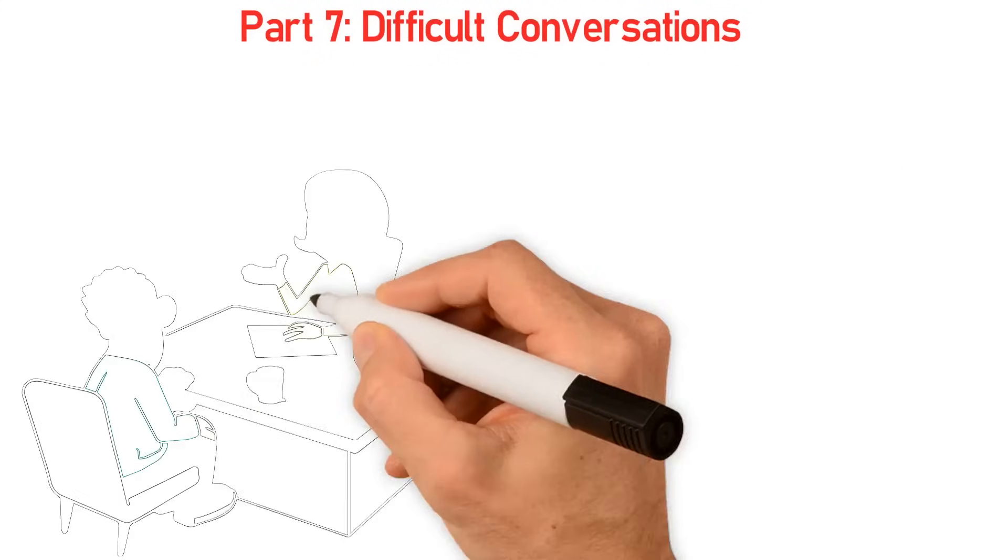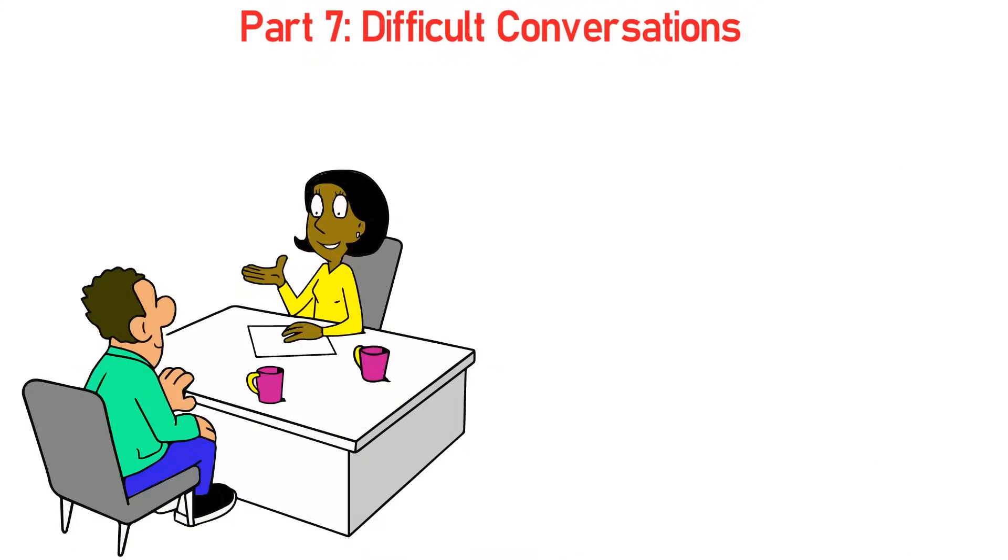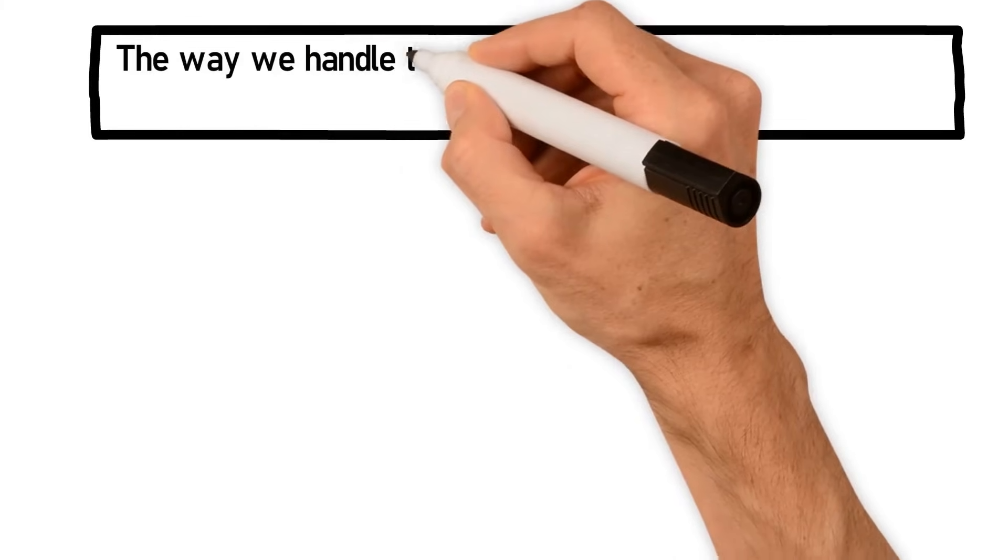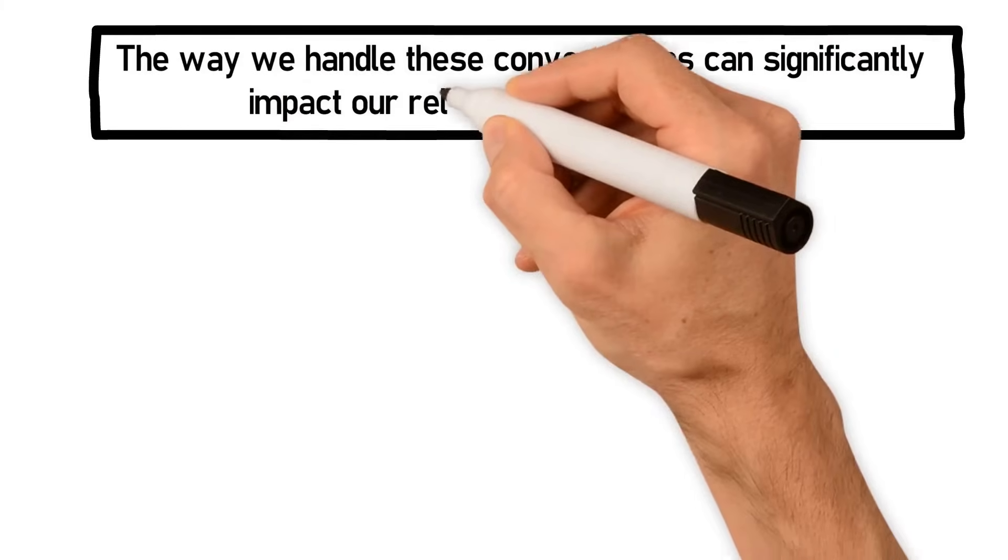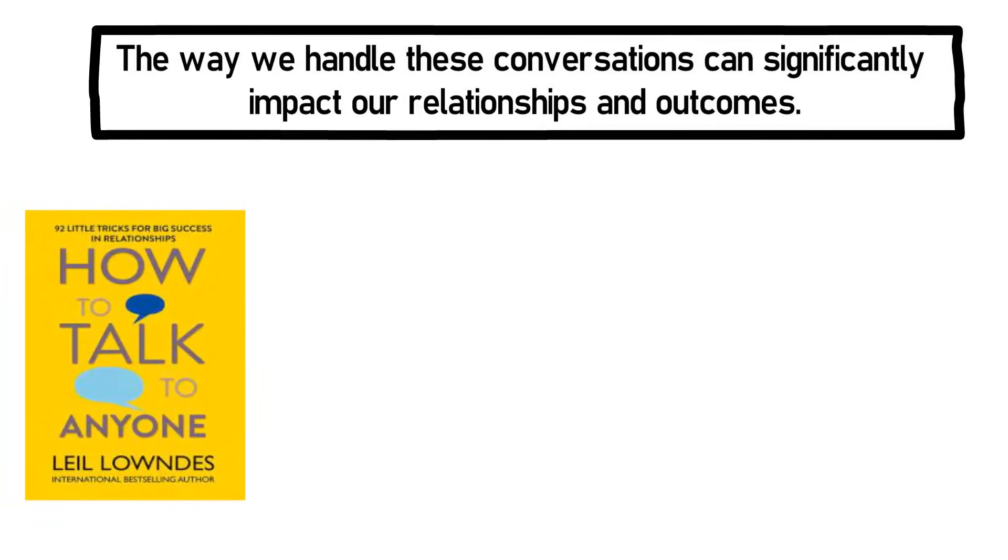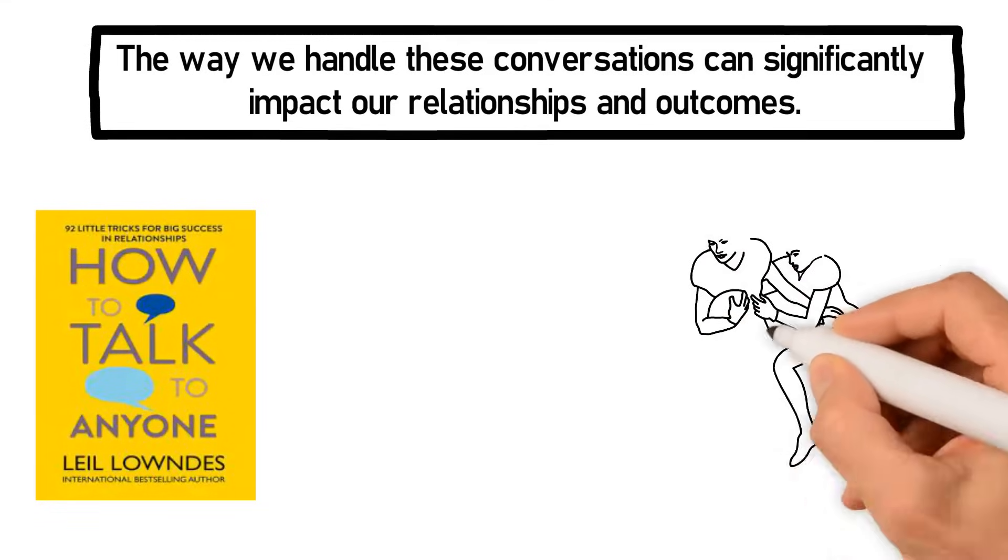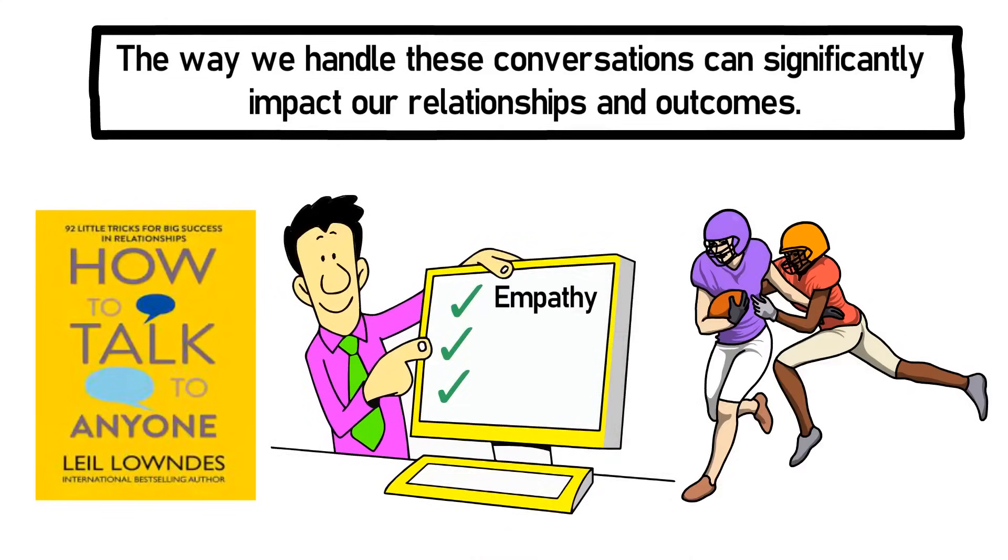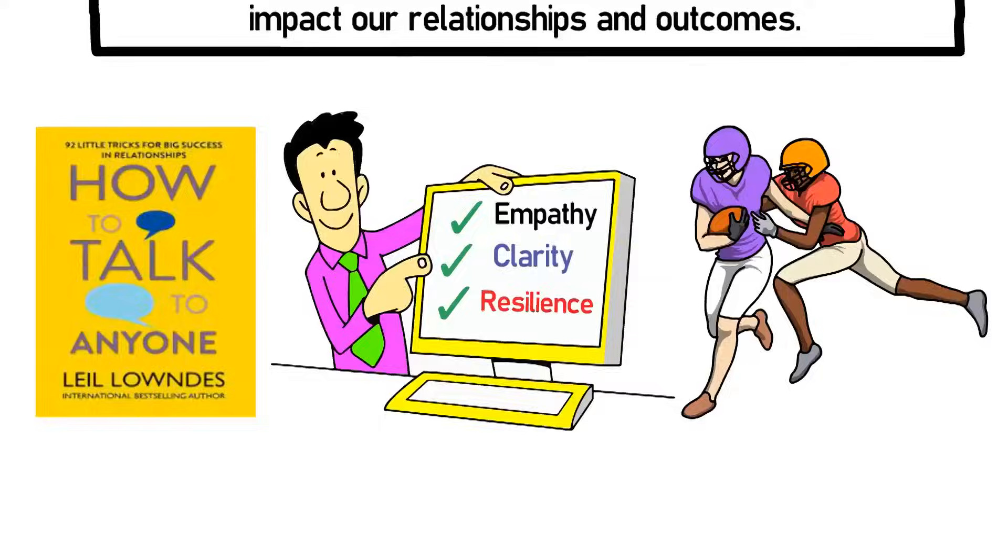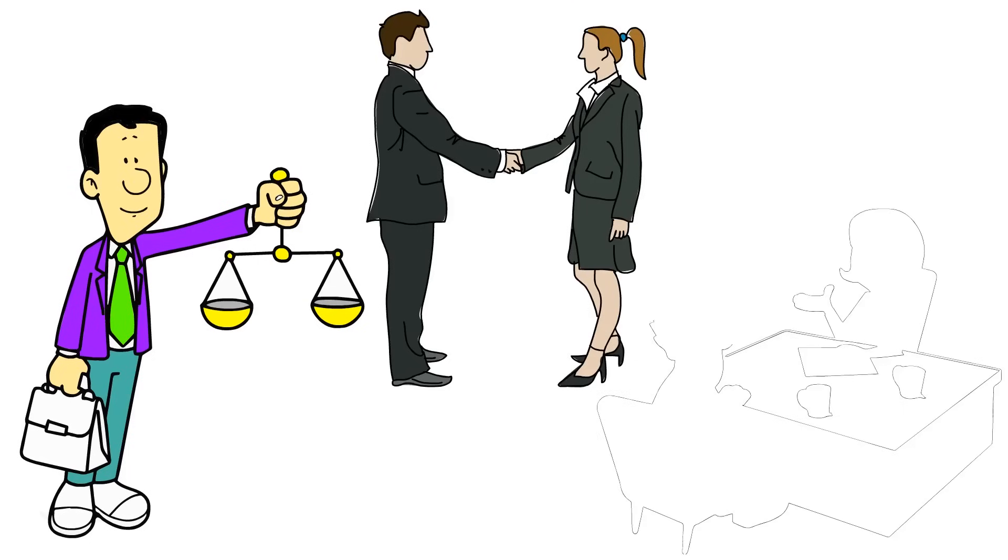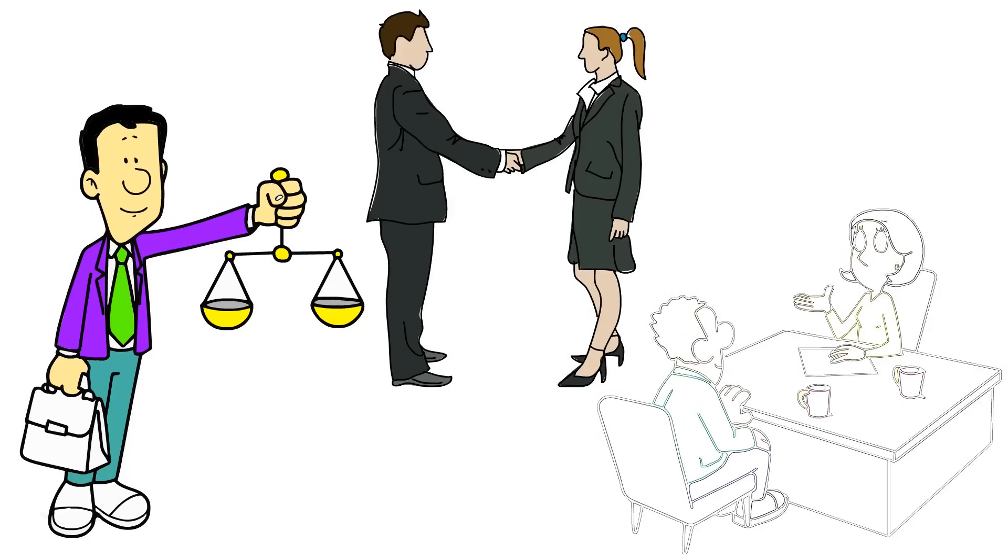Part 7: Difficult Conversations. Difficult conversations are an inevitable part of both personal and professional life. Whether it's addressing a sensitive issue or confronting a disagreement, the way we handle these conversations can significantly impact our relationships and outcomes. In How to Talk to Anyone, Leil Lowndes provides invaluable guidance on navigating these challenging dialogues with grace and effectiveness. Handling difficult conversations requires a blend of empathy, clarity, and resilience. It's about striking a balance between being assertive and understanding, ensuring that the conversation leads to resolution rather than further conflict.